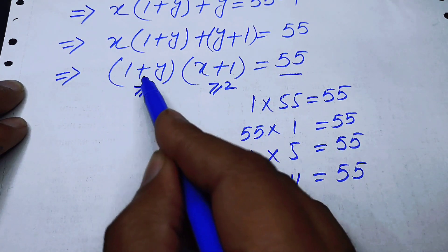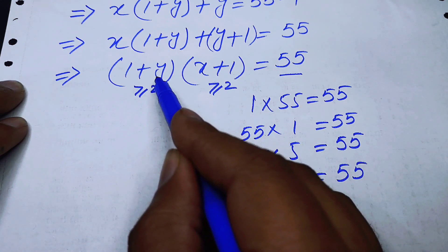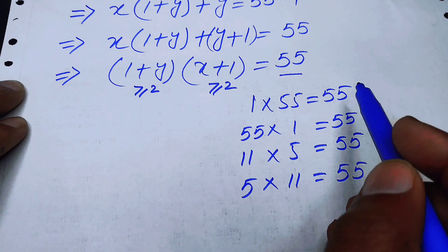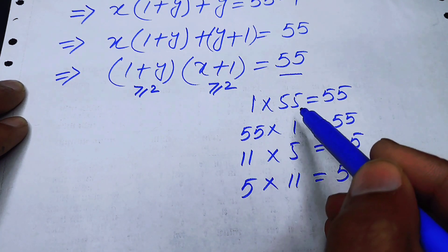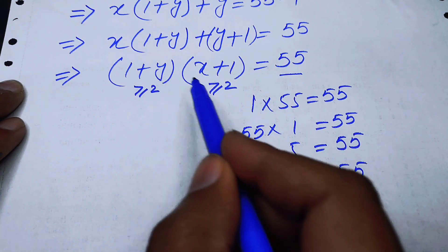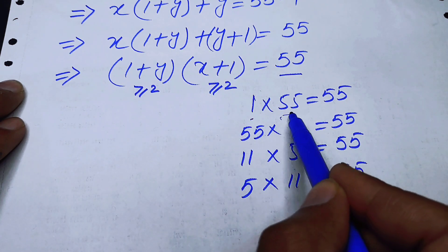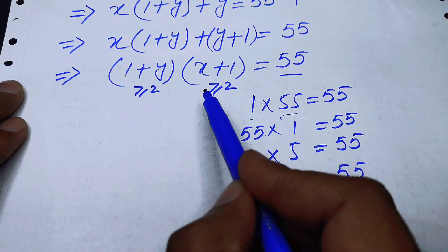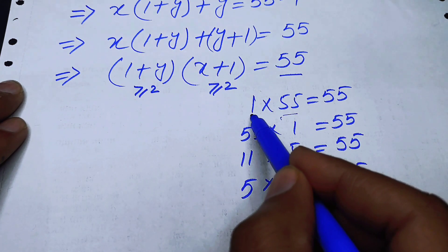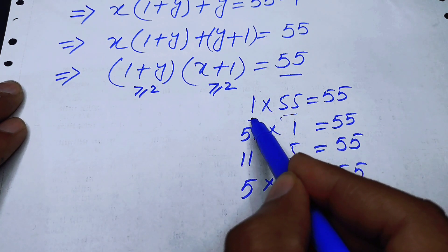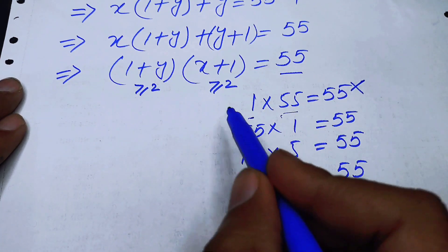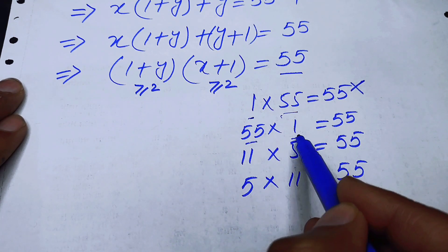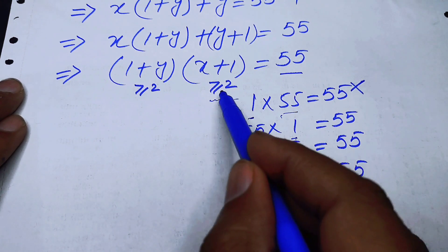We compare (1 + y)(x + 1) against each factor pair. In the first case, if 1 + y = 1 and x + 1 = 55: since (1 + y) must be greater than or equal to 2, we cannot choose this. Similarly, if 1 + y = 55 and x + 1 = 1: since (x + 1) must be greater than or equal to 2, we cannot choose this one either.